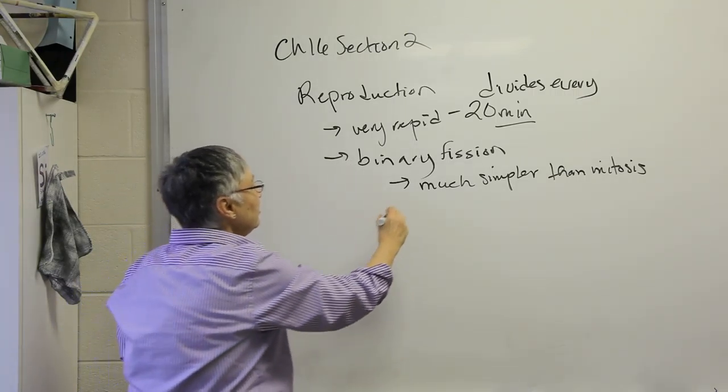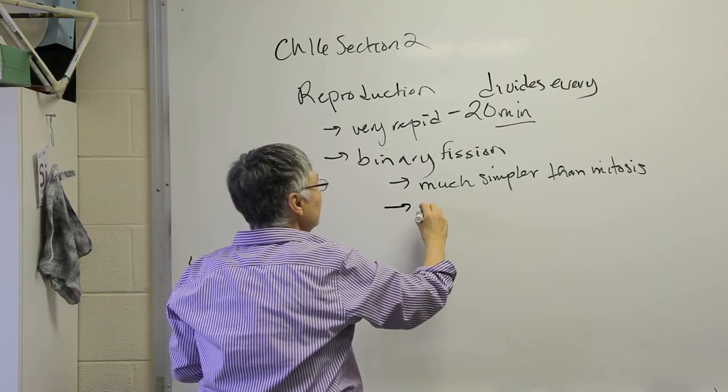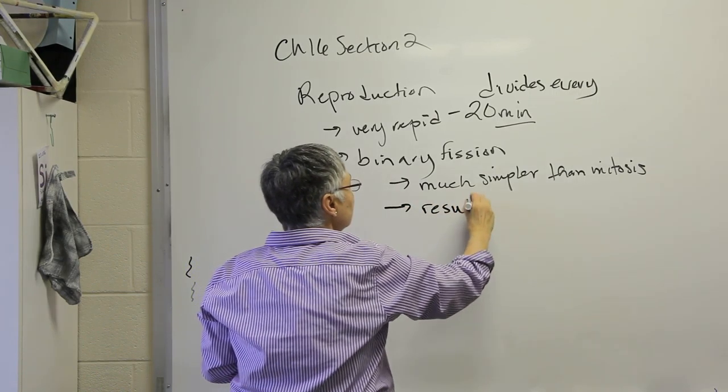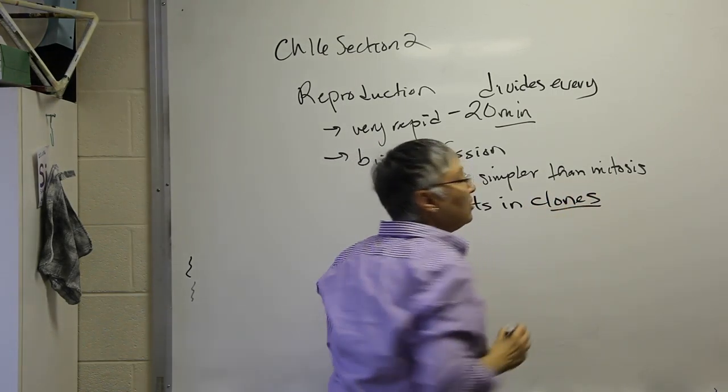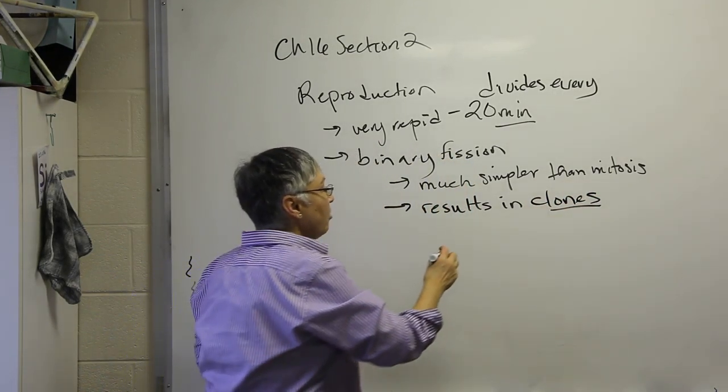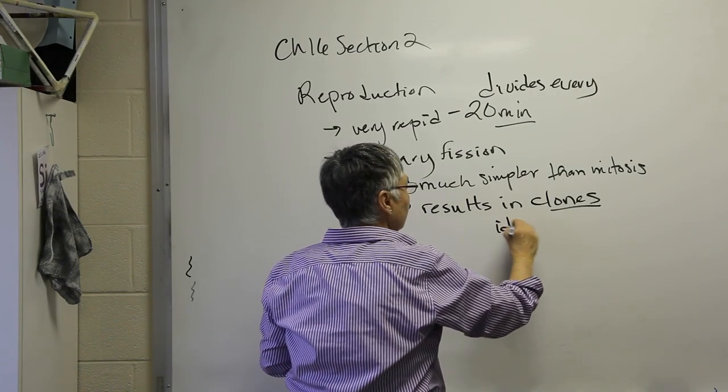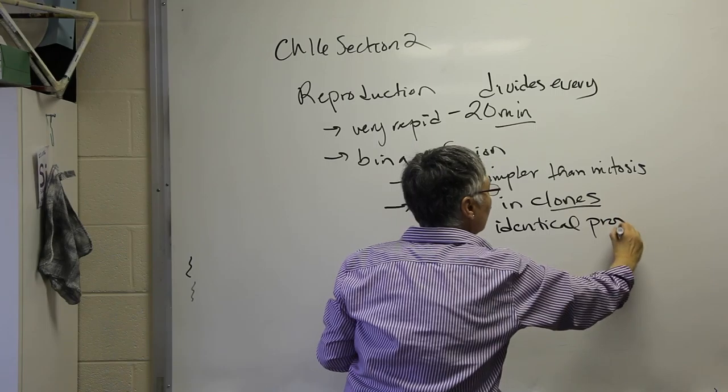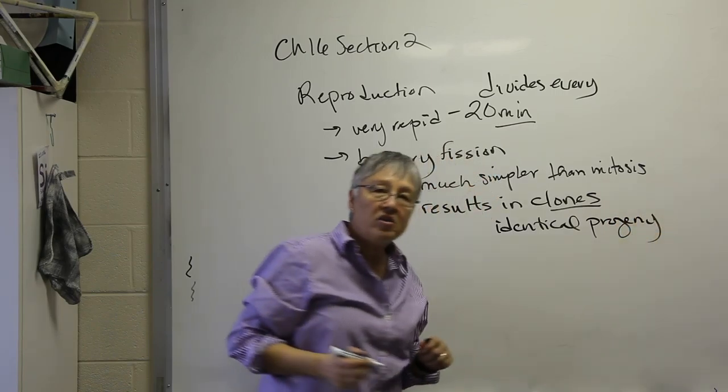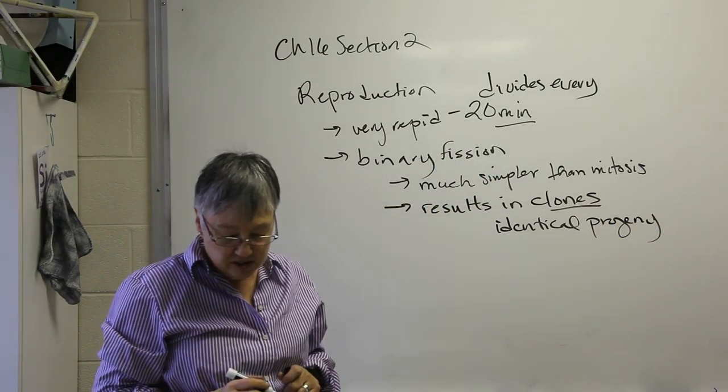Another characteristic of binary fission is that it results in clones, in other words, cells that are identical. So identical daughter cells or progeny cells.